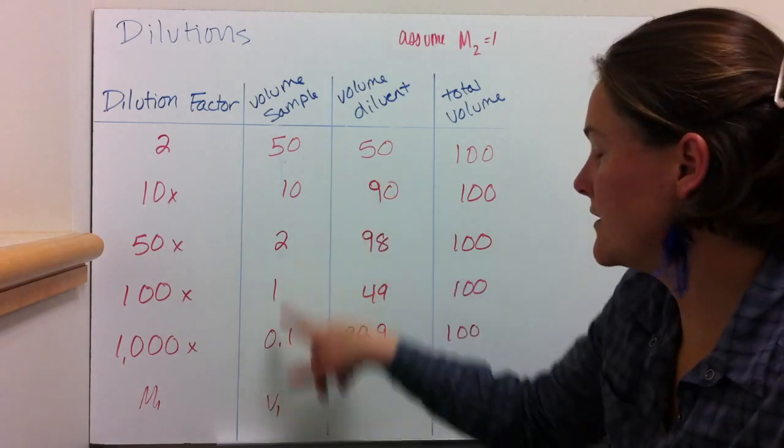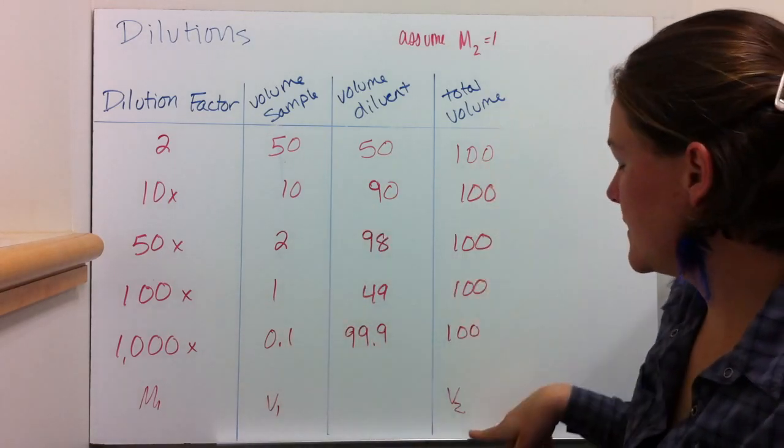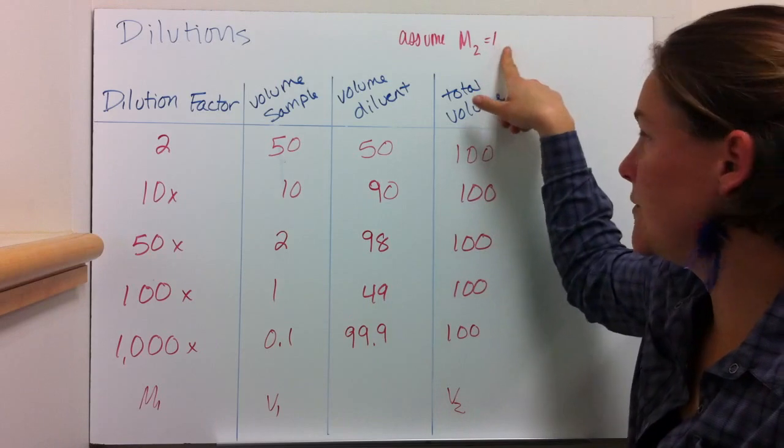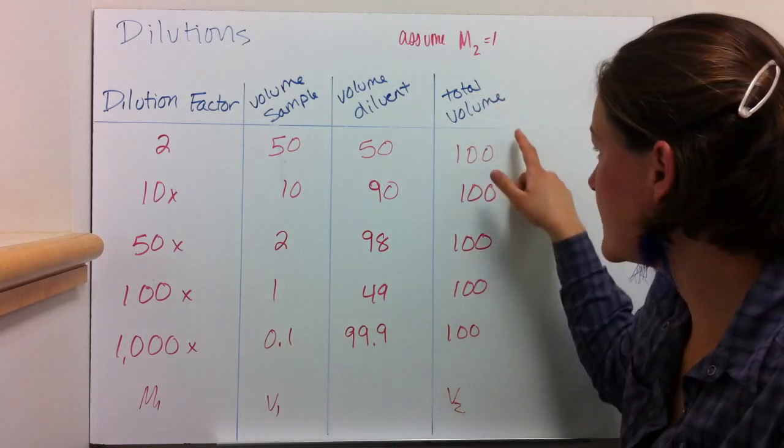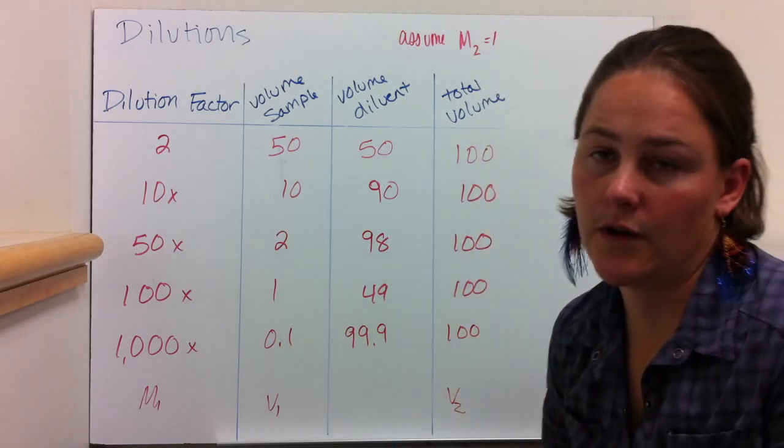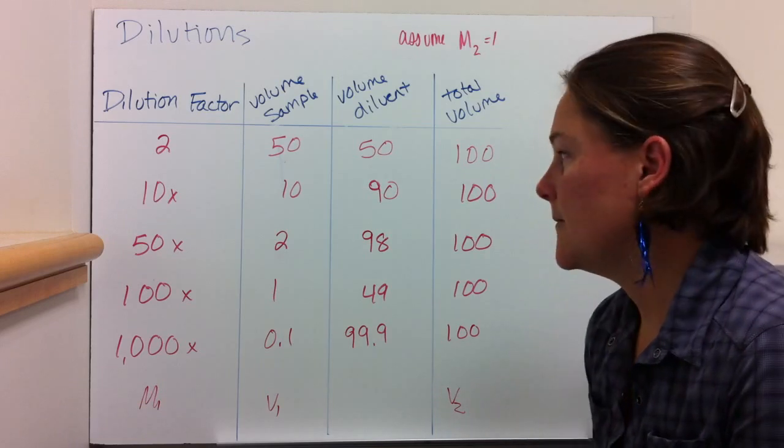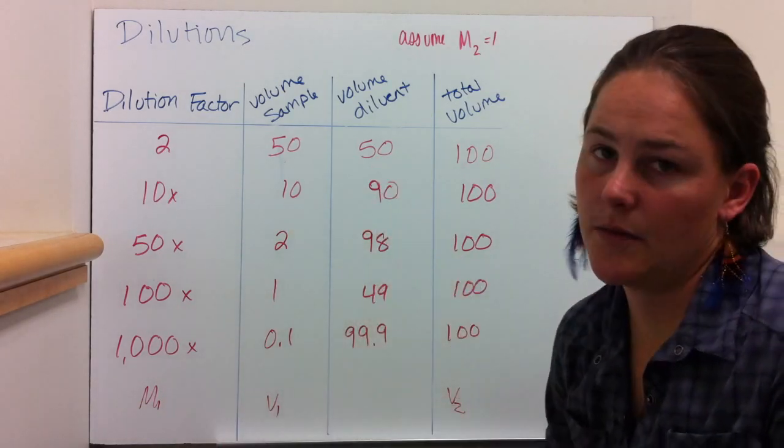This equals M2, which you just assumed to be 1 in this case, times the total volume which is V2. So this is really handy. You're going to need this in lab the first week to calculate...